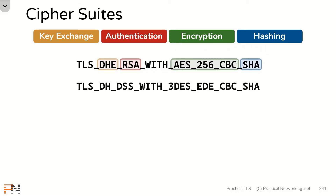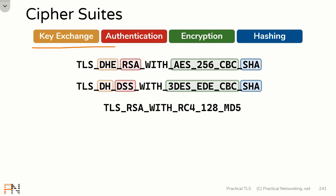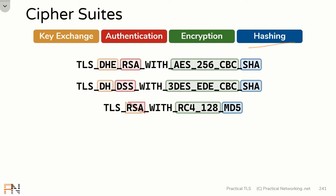Here is another cipher suite. This cipher suite has different protocols for key exchange, authentication, and encryption, and happens to be using the same protocol for hashing. Here is yet another cipher suite. This one's a little bit trickier because one protocol is actually doing both the key exchange and the authentication — RSA is actually handling both of those. Then you have RC4-128 for your symmetric encryption, and finally MD5 as your hashing algorithm.